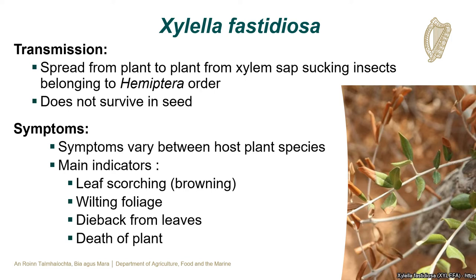Xylella fastidiosa is transmitted or spread from plant to plant through xylem sap-sucking insects which belong to the Hemiptera order, such as spittle bugs. Xylella fastidiosa does not survive in seed. Symptoms of Xylella fastidiosa can vary between host plant species. The main indicators include leaf scorching or browning, the wilting of foliage, dieback from the leaves and the death of a host plant.